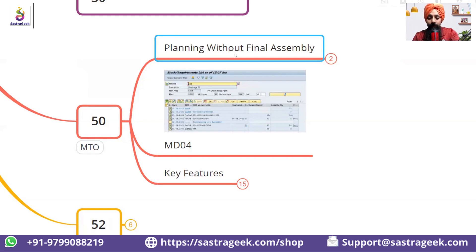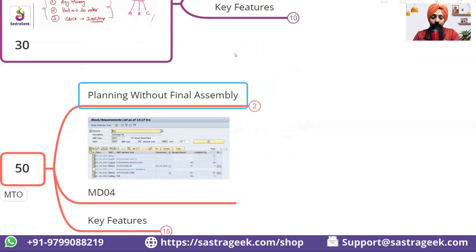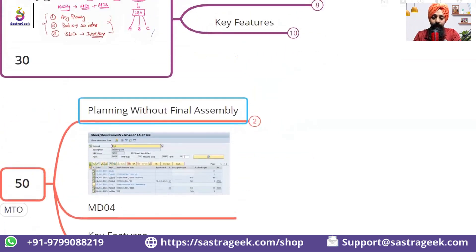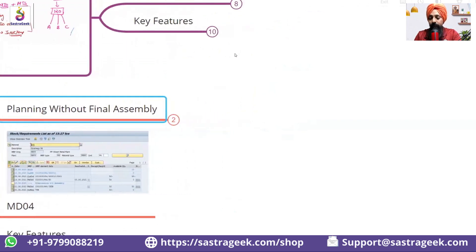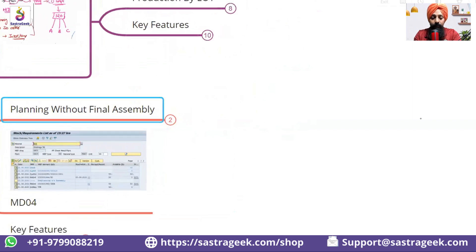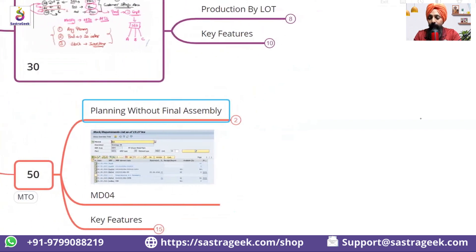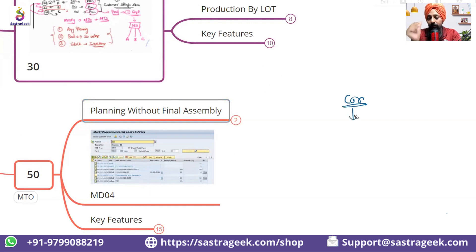So what would be happening here? Let me first explain the scenario for this strategy — what kind of scenario Strategy 50 is used for. Let's say you are having a car, and to produce a car you are having different variants.